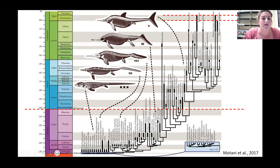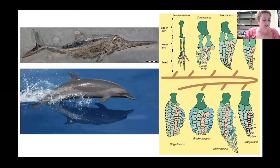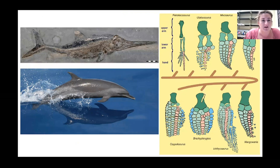Looking at these body plans, you can see how ichthyosaurs changed from a very lizard-like animal through to something resembling a dolphin or shark - this evolution of adaptations to a completely aquatic lifestyle. The resemblance of ichthyosaurs to dolphins and whales is striking: they have a dorsal fin, and we know ichthyosaurs had dorsal fins because soft tissues are preserved in fossils from Germany, specifically the Posidonia Shale, and we can see a large fluke on the tail.